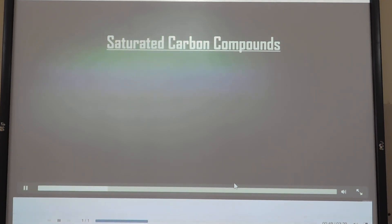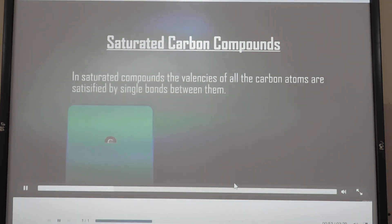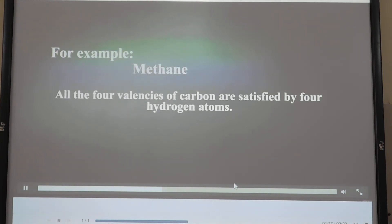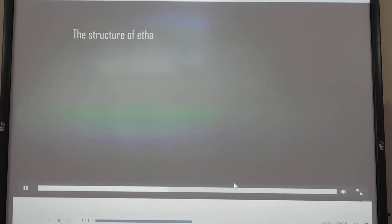Saturated carbon compounds: In saturated compounds, the valencies of all the carbon atoms are satisfied by single bonds between them. For example, ethane - all the four valences of carbon are satisfied by hydrogen atoms. Let us look at the structure of ethane. Link the two carbon atoms together with a single bond. The three valences of each carbon atom remain unsatisfied, though each is bonded to three hydrogen atoms, giving rise to ethane molecule.